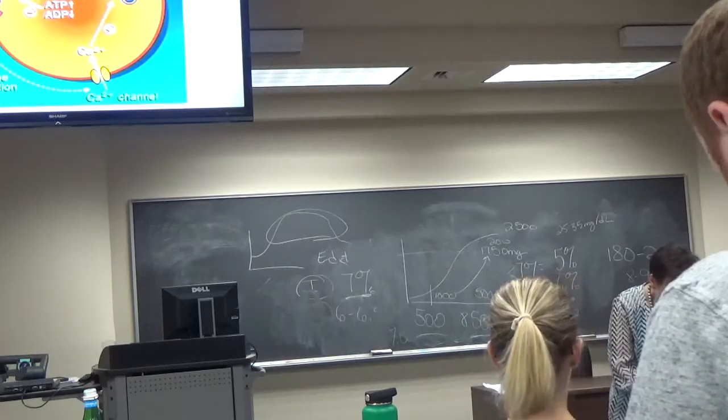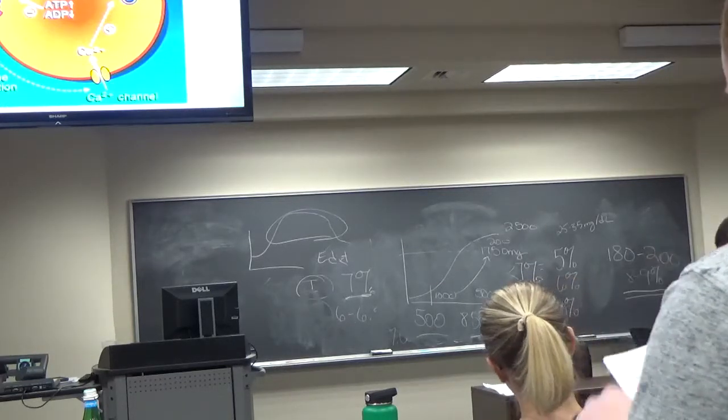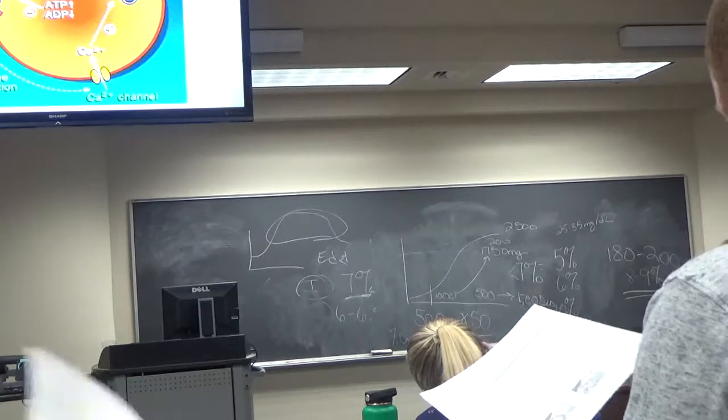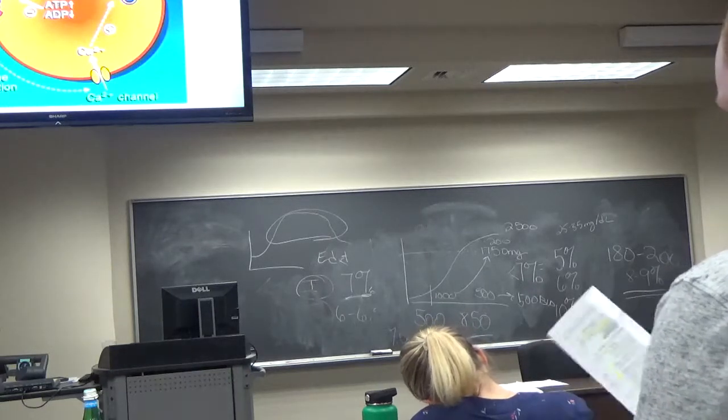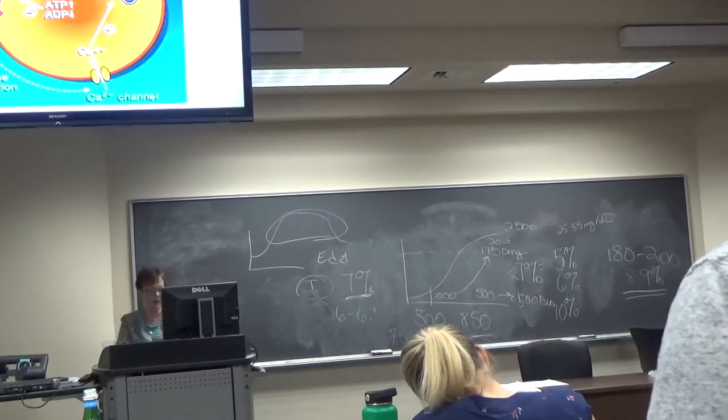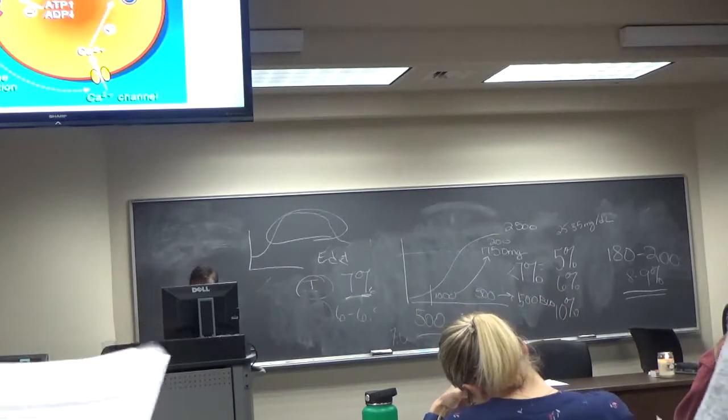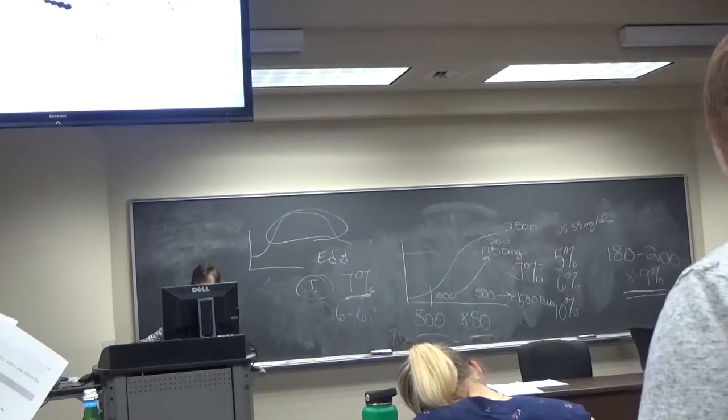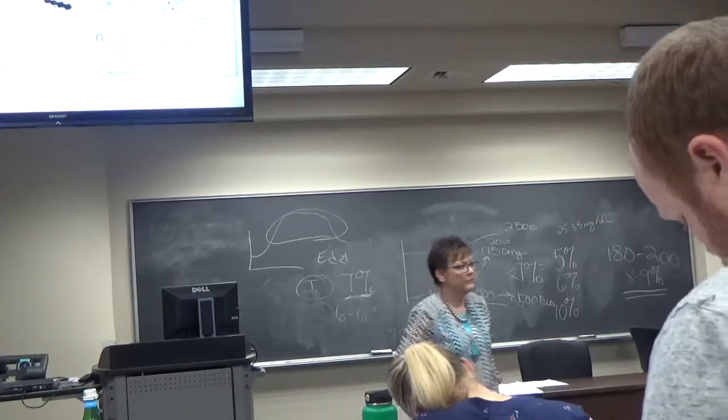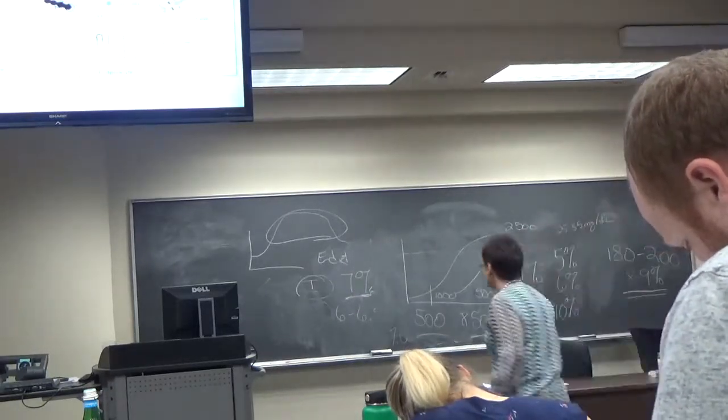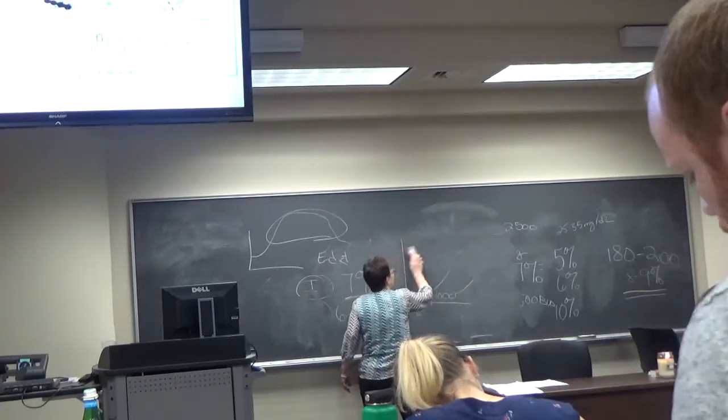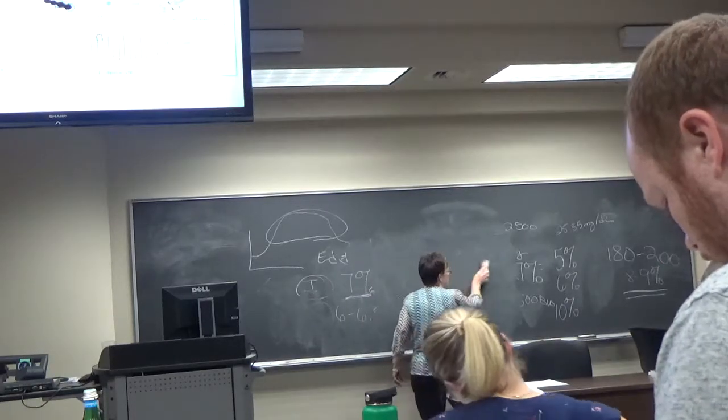So next drugs, alpha-glucosidase inhibitors. These are great drugs, but nobody uses them because the side effects are just socially unacceptable. So these are drugs that work like fiber. They work in the small intestines and they sit on the enzymes that break down starch. So what they do is, just like fiber, very similar to fiber.